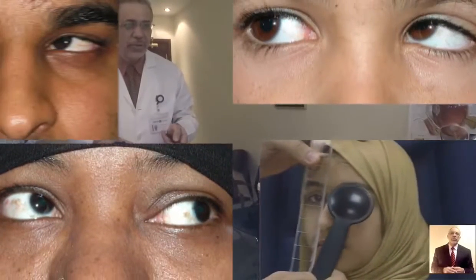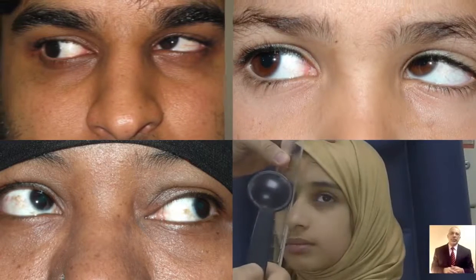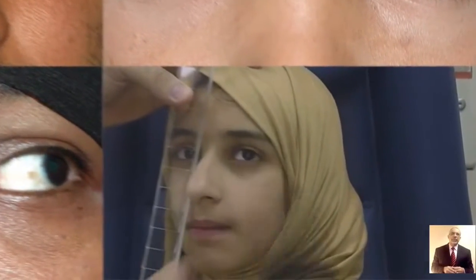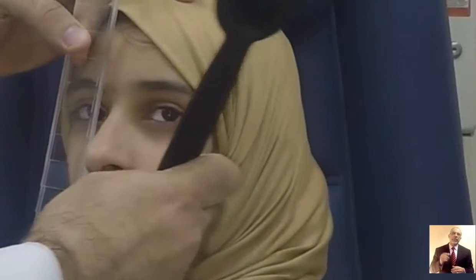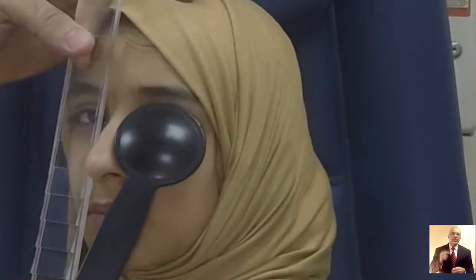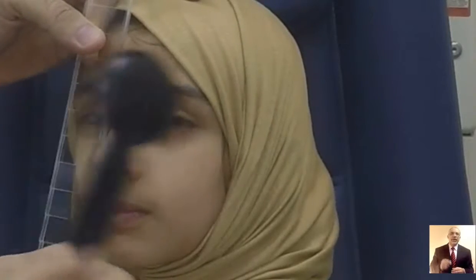Thirty patients with inferior oblique overaction were included in this work. Fifteen of the patients were evaluated for inferior oblique overaction by measuring the amount of hypertropia of the adducting eye using a vertical prism during extreme levoversion and dextroversion.